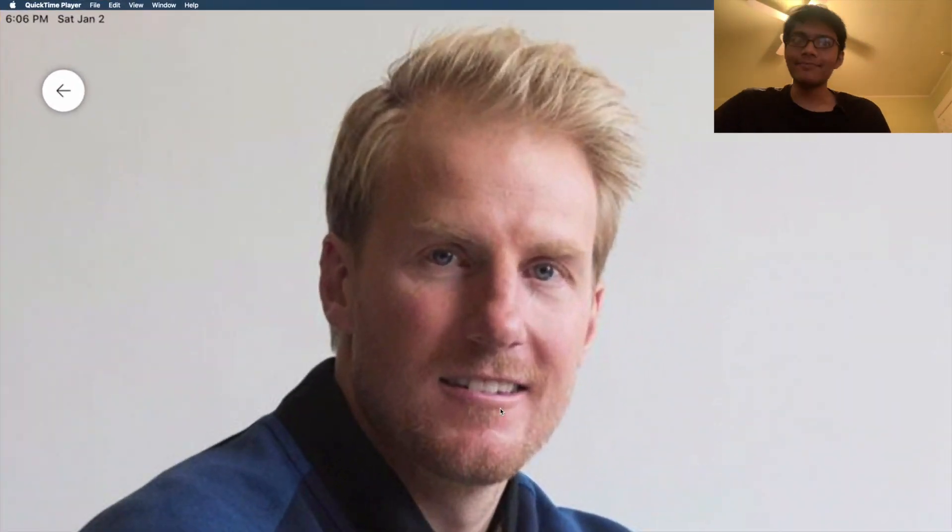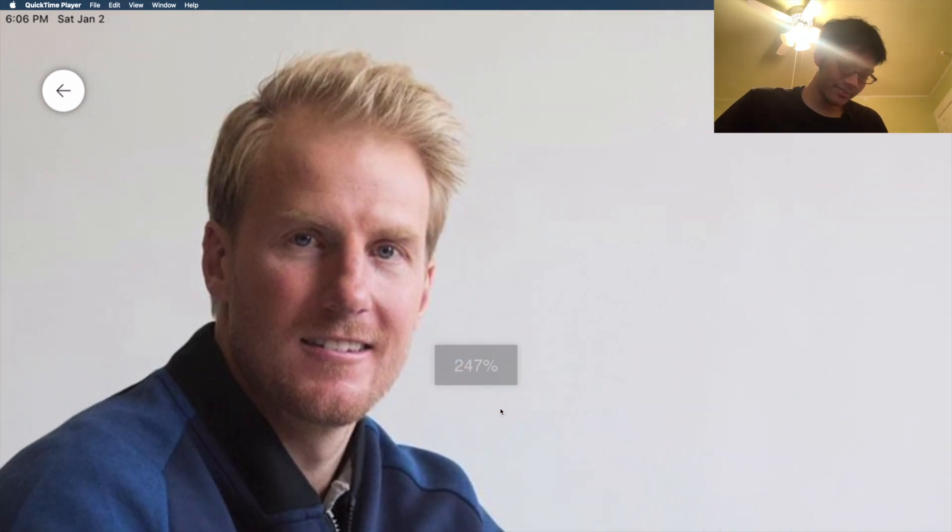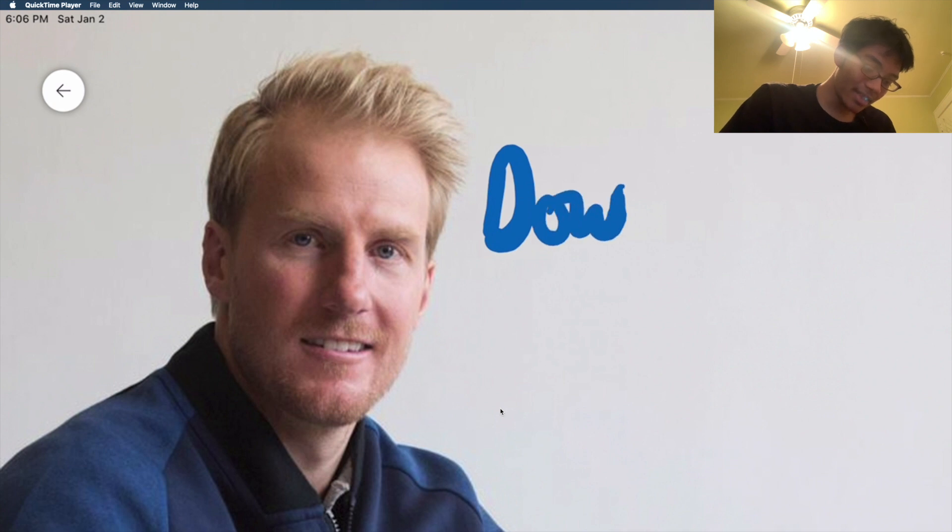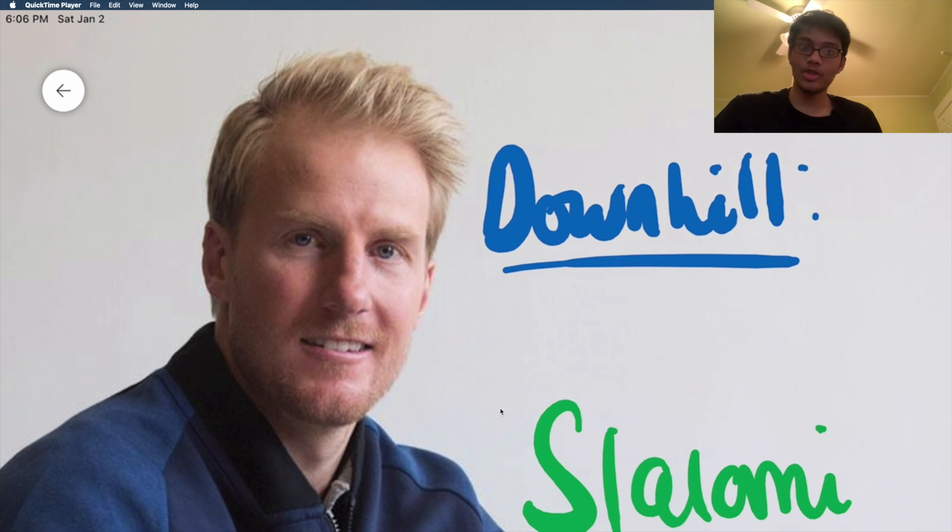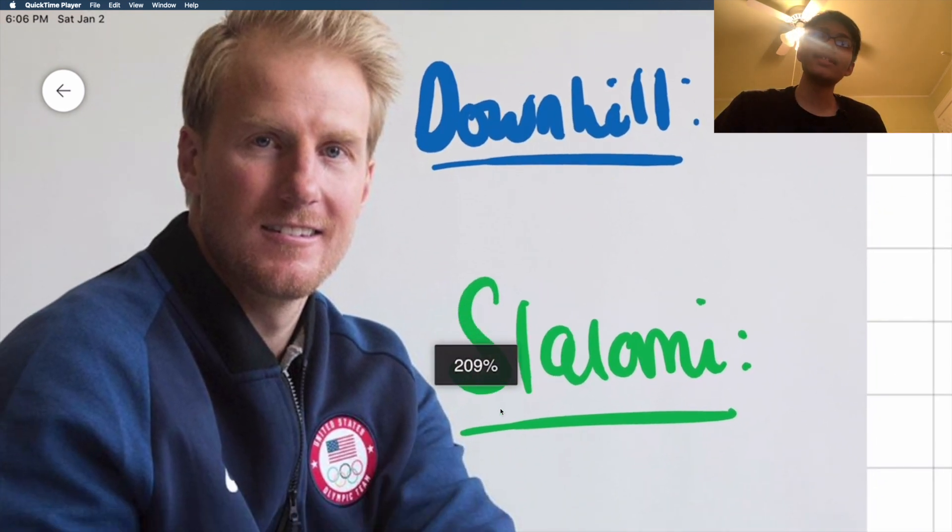This guy right here is Ted. He represents the United States in the Olympics and he's pretty good at skiing. So let me give you Ted's stats. Ted competes in two types of races: Downhill and something called the Slalomi. And no, it has nothing to do with the fish.